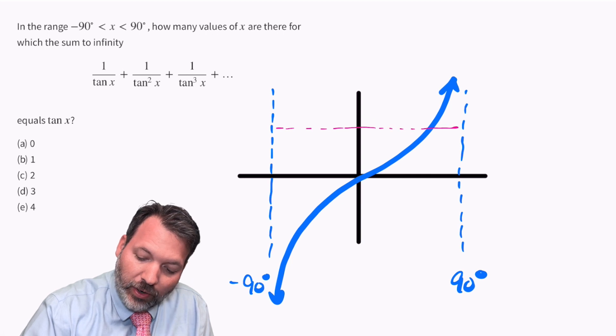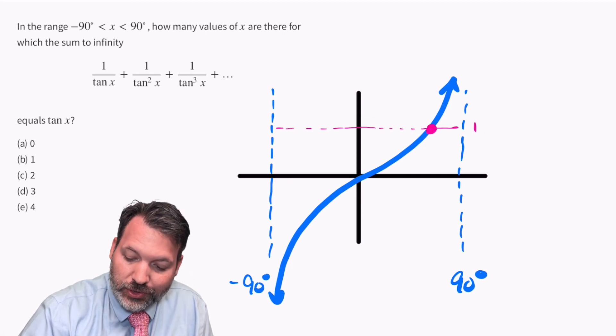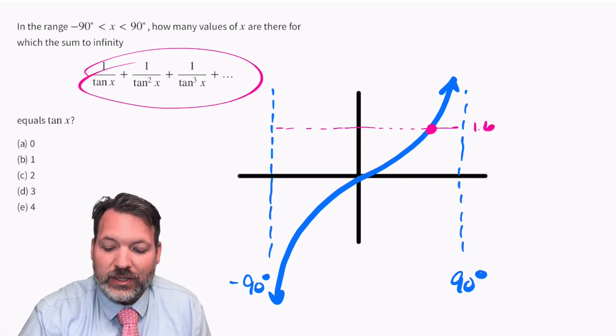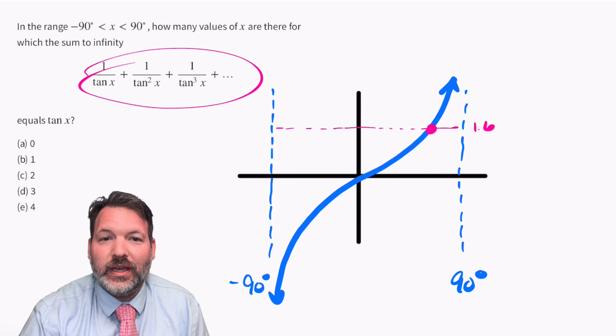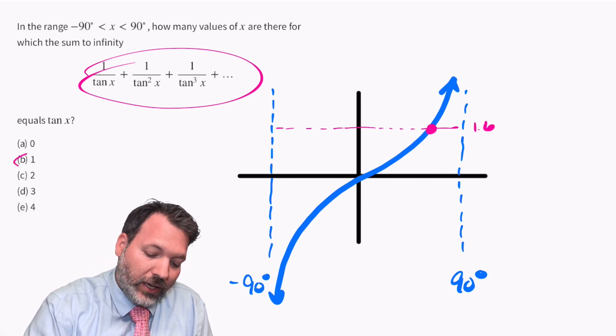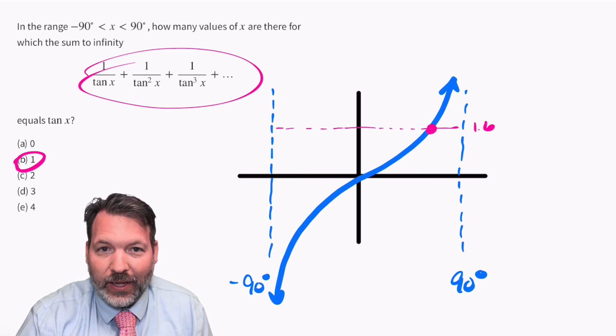Wherever tangent x is equal to roughly 1.6, we should see an intersection with this infinite series. And obviously, on this interval from negative 90 to positive 90, that will happen only once. And so there it is, b is our answer.